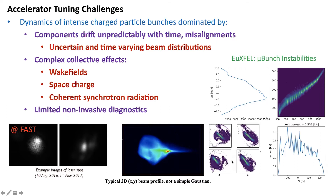At LANSCE especially — this is just simulation data of our longitudinal phase space — we have these tails and filamentation of the phase space because we're a very space-charge-dominated beam. At the very end of our machine we're only at 800 MeV with protons or H-minus ions, so we're always suffering from space-charge forces. Even at free electron lasers where electrons are instantly relativistic at 5 MeV, you have such intense bunches that once you start to compress them, you get these micro-bunched instabilities.